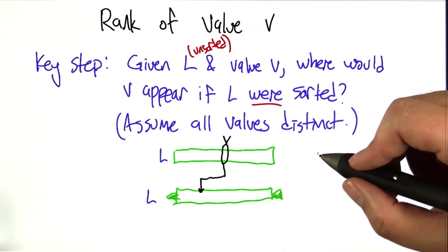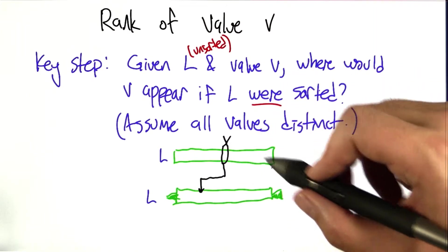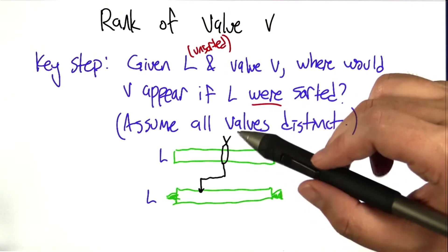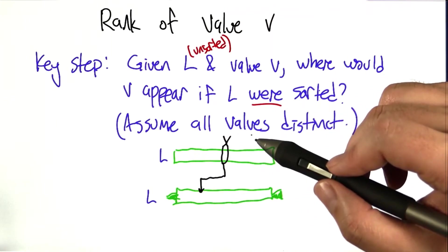Now, one way to solve this problem, of course, is sort L, and then look for V. But the insight here is that we don't need to do nearly that much work. So how do we do it? So let's look at a concrete example.